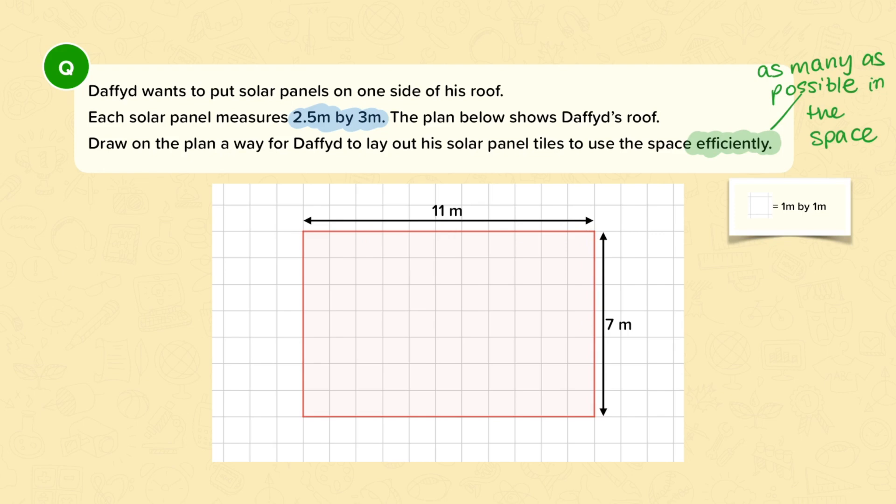So to draw one solar panel we need 2.5 squares by 3 squares. Now I need to decide which way round to put the solar panels so that as many as possible can fit on the roof. So I can either do 2.5 by 3 that way, or I can do 3 that way by 2.5 this way.